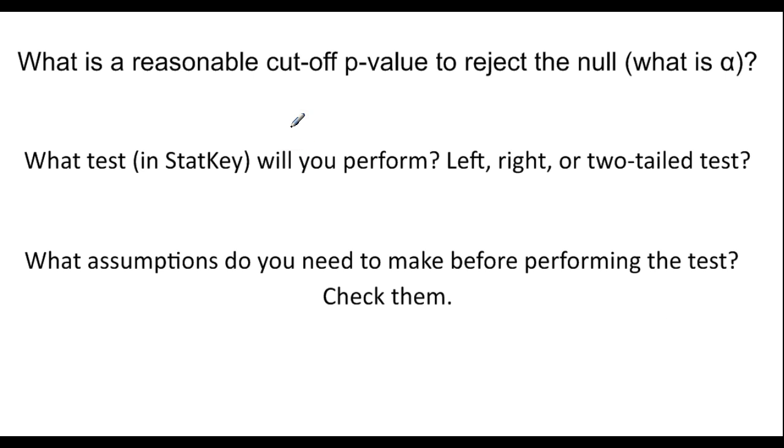Continuing on, we're asked, what is a reasonable cutoff p-value to reject the null? There's a lot there. So what we're trying to say is, how unlikely do our results need to be before we are convinced that something fishy is going on? And so we have to decide what is the cutoff value. And that cutoff value gets its own symbol, we call it alpha. And the percentage that is typically used is 5%. So 0.05 is typically the p-value. Anything below that is going to be rejected.